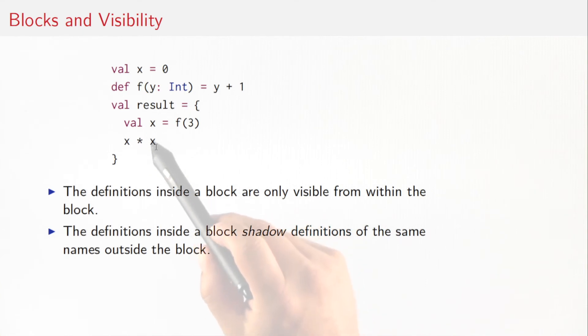So that means that, for instance, here the name f is visible in the block. It refers to this outer name f. But the name x here refers to the inner name x, not the outer name x. The inner name x shadows the occurrence of the outer name.